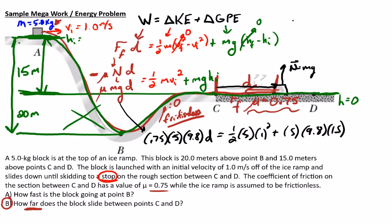Now it's just a big math problem — I just have to solve for d. One neat thing: when you don't have elastic potential energy, the mass of the object is actually not relevant. Notice this term is multiplied by mass, this term is multiplied by mass, and this term is multiplied by mass — I can cancel all the masses out. I can't cancel the 9.8s because kinetic energy doesn't depend on gravity, but I can cancel out the masses.